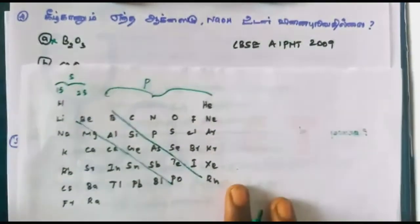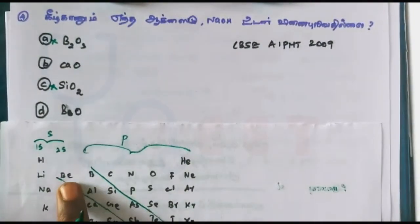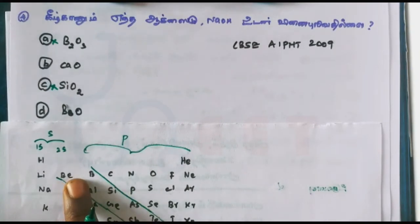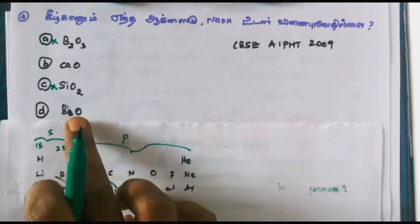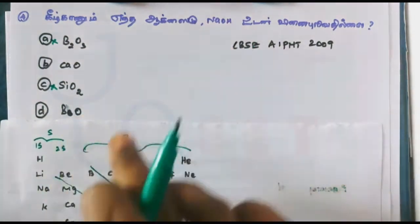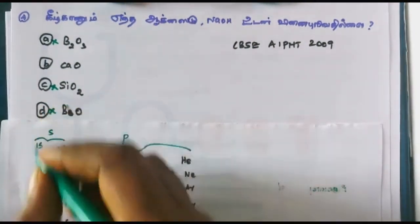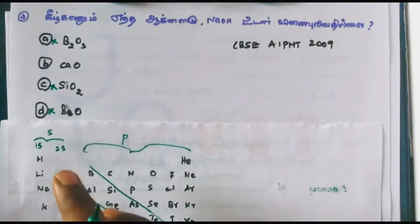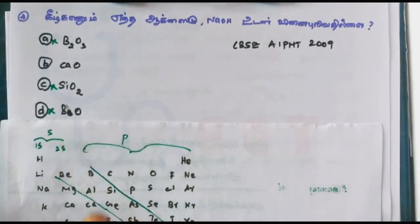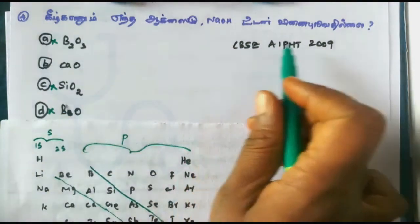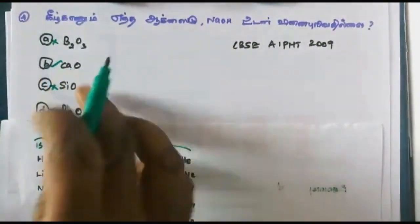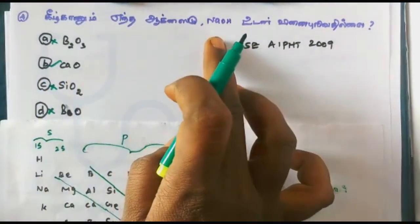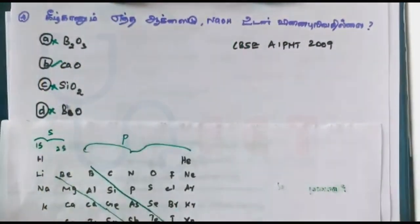Beryllium oxide, calcium oxide — we know what we need to know. Beryllium oxide is an amphoteric oxide. Calcium oxide is a basic oxide, and sodium oxide is also a basic oxide. Beryllium oxide is classified as amphoteric.